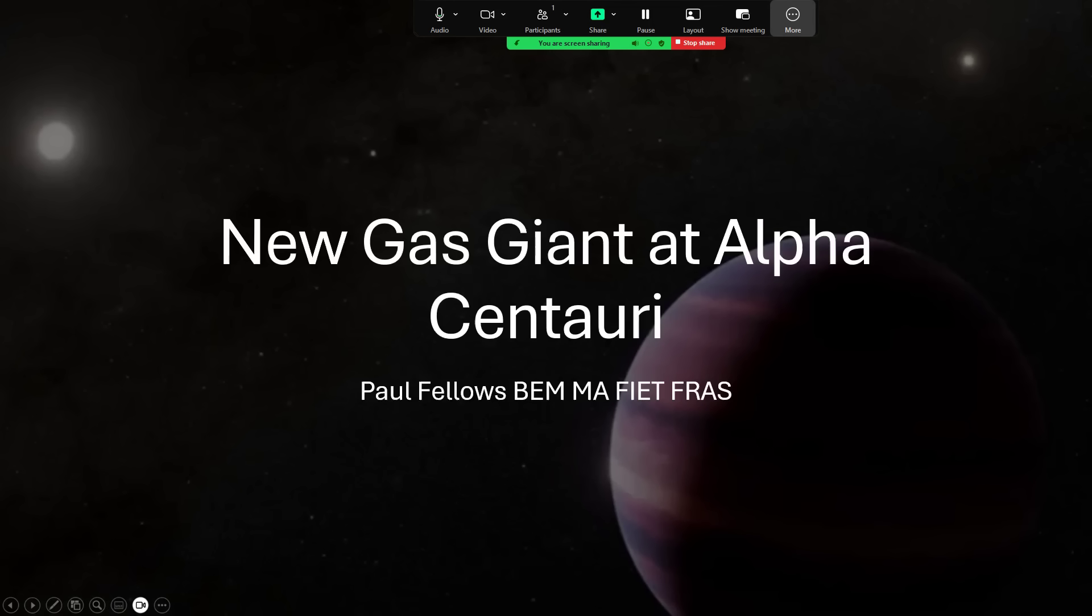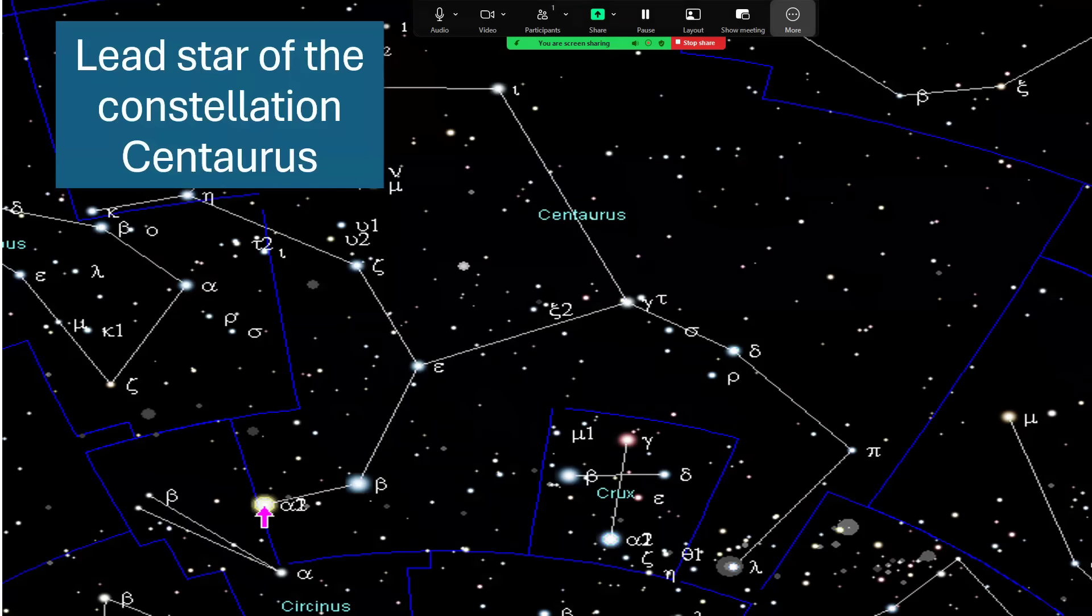So it looks like we've found a new gas giant at Alpha Centauri. Alpha Centauri is of course the nearest star to the Sun and the lead star of the constellation Centaurus down there in the southern hemisphere, just to the left of the southern cross.